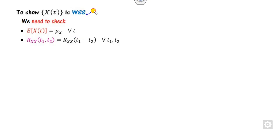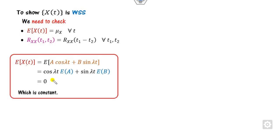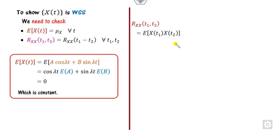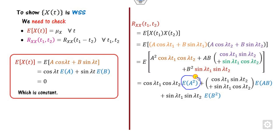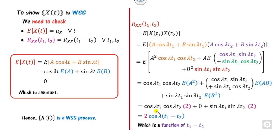Now let us prove it is weak sense stationary by verifying the two conditions. The first condition — constant mean — is already proved since E[x(t)] = 0 for all t. For the autocorrelation R_xx(t1, t2), we substitute x(t1) and x(t2), open the bracket, and use the computed expected values. Using the identity cos(a)cos(b) + sin(a)sin(b) = cos(a-b), the result is a function of the time difference t1 - t2. Hence both properties are satisfied, so this is a weak sense stationary process.